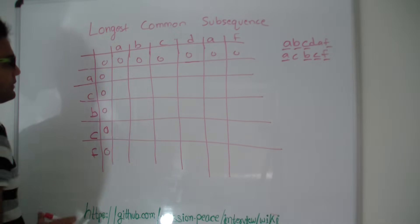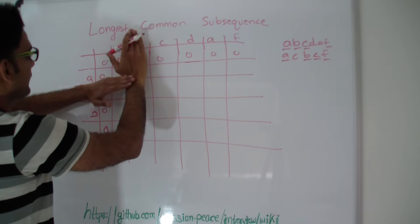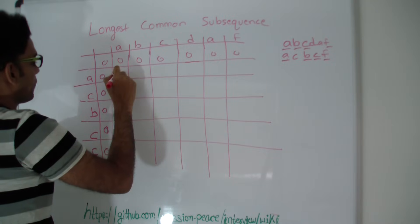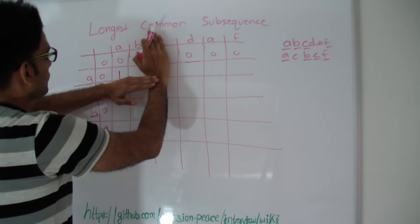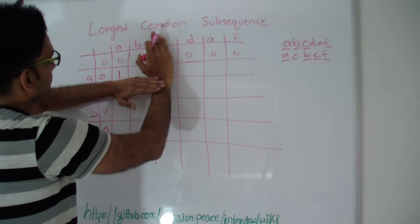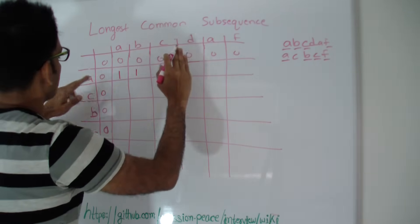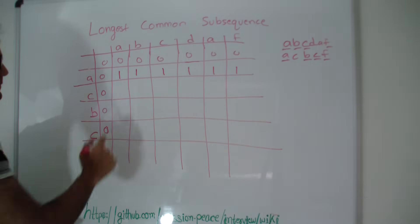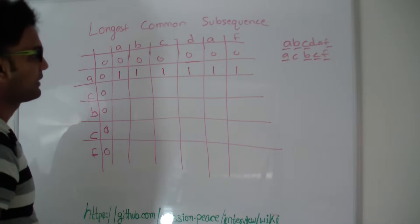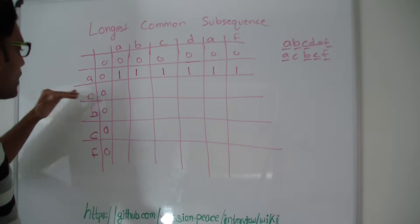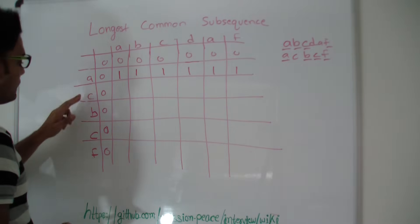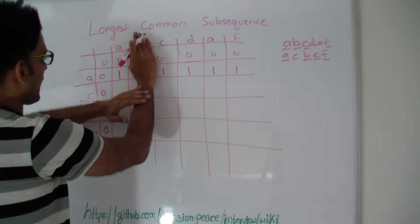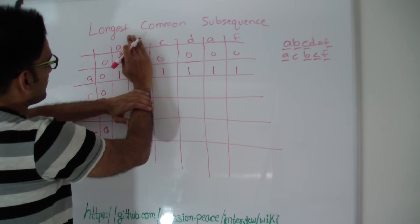When I'm filling this particular point in the matrix I'm asking myself: if I had string a and a and nothing else, what will be the longest common subsequence here? The length will be one. Moving along, if I have string a,b and a, the longest common subsequence is still length one — and this holds for the whole first row. So if we had string a,b,c,d,a,f on one side and just a on the other side, the longest common subsequence will be a. Now we'll fill the third row which includes c.